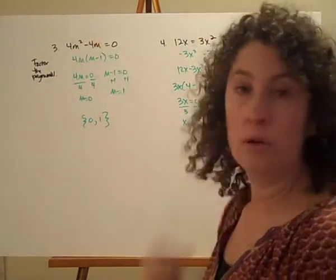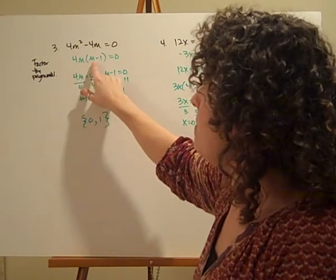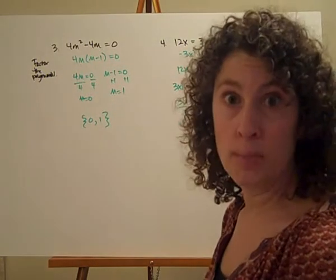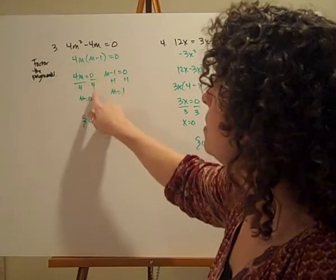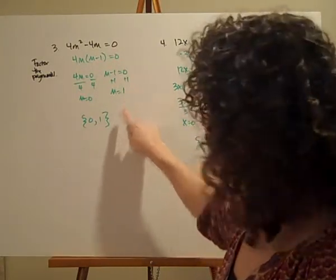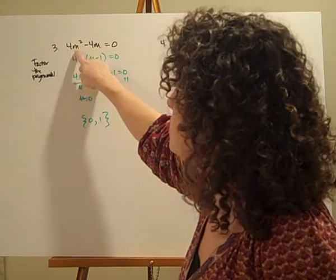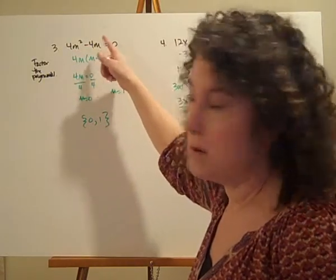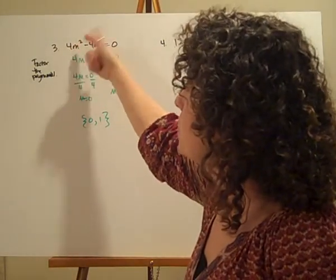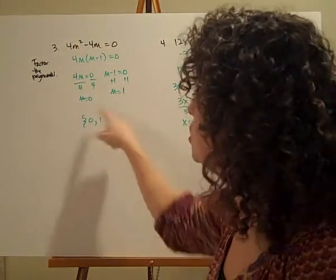This is a binomial, so I look for common factors. I can take 4m out of each term. 4m squared divided by 4m is m, and negative 4m divided by 4m is negative 1. So I've got two factors: 4m times the quantity m minus 1, equals zero. Now this looks like our first example. Setting each factor equal to zero: 4m equals zero gives m equals zero, and m minus 1 equals zero gives m equals 1. Two solutions: zero and one. Checking: 4 times 0 squared minus 4 times 0 is 0 minus 0, which is zero. And 4 times 1 squared minus 4 times 1 is 4 minus 4, which equals zero.